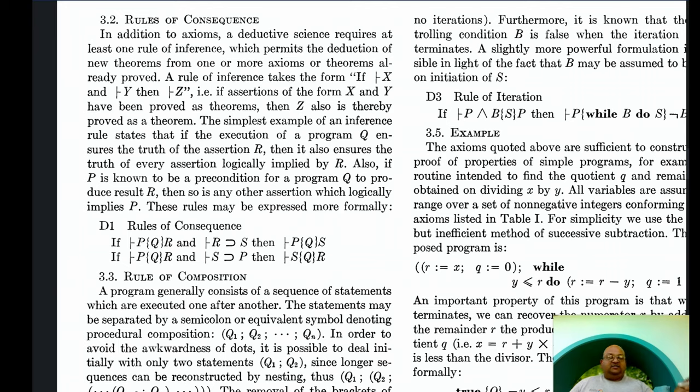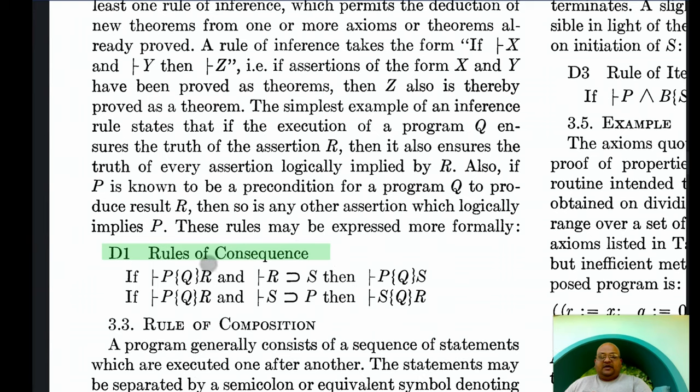Let's start with the first simple one, the rules of consequence. The first rule of consequence is that if we have a post-condition R and R implies S, then we can also specify S as a valid post-condition. In other words, if a program is ensuring the truth of an assertion R, then it also ensures the truth of every assertion implied by R. Doing the same thing for preconditions, if we have a program that has a precondition P and another precondition S implies P, then we can use S as a precondition for that program.